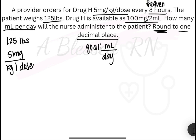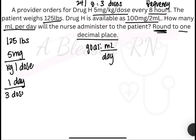Now you see that 8 hours right there? That is the frequency — how many times you would give a dose in a day. And because it's asking us to find how many milliliters per day, we need this. So 24 divided by 8, because 24 hours divided by 8 hours is 3 doses. So in one day, there are 3 doses.